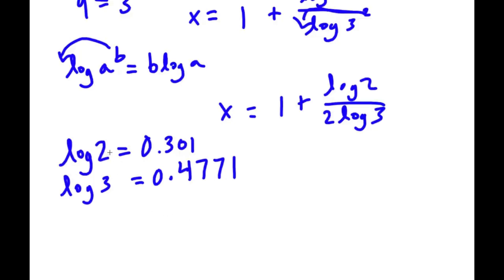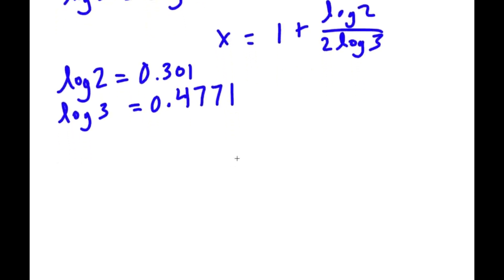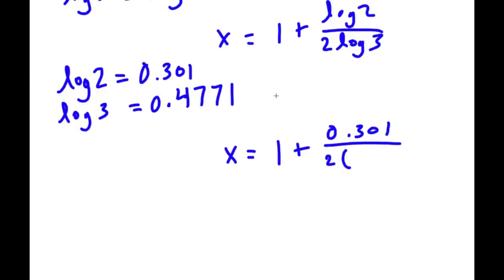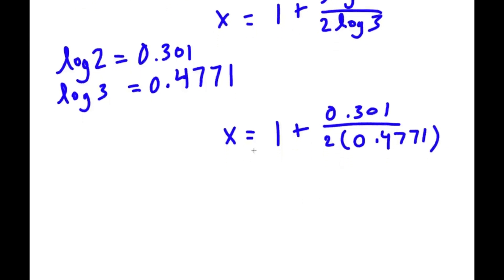So now if I substitute in log 2 and log 3 into our equation, I get x is equal to 1 plus 0.301 over 2 times 0.4771. Now 2 times 0.4771 is equal to 0.9542.